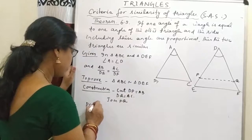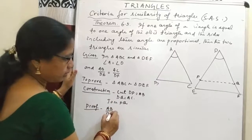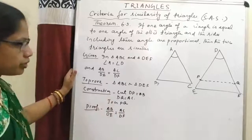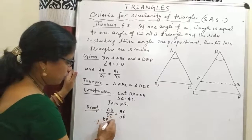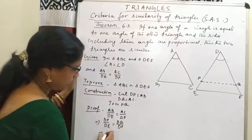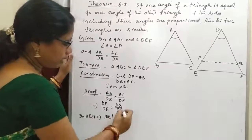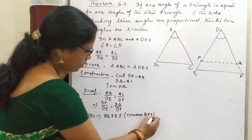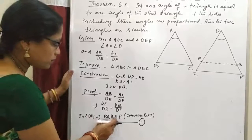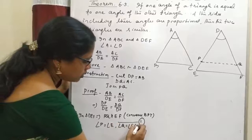Proof: it is given that AB/DE equals AC/DF. Since we have taken AB equal to DP and AC equal to DQ, this implies DP/DE equals DQ/DF. So this implies PQ is parallel to EF in triangle DEF by the Converse Basic Proportionality Theorem. If PQ is parallel to EF, then angle P equals angle E and angle Q equals angle F — these are corresponding angles.